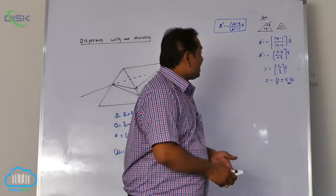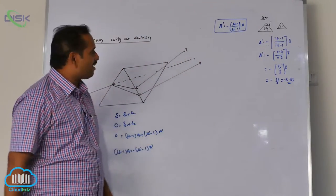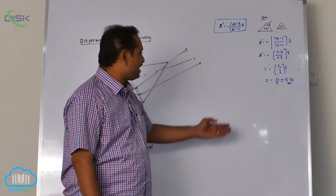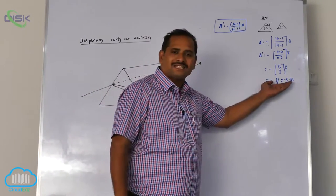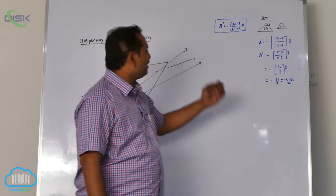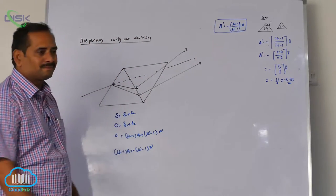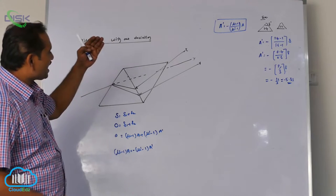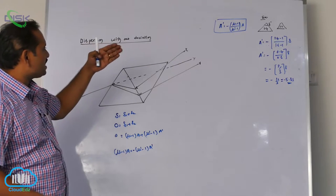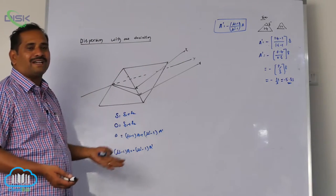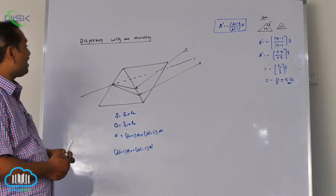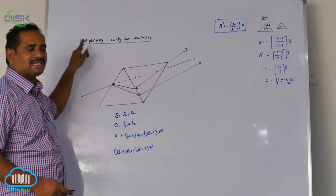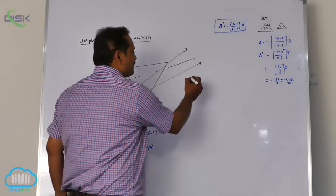To check whether the answer is correct: the angle of the prism should be less than 10 degrees, and 5.33 is less than 10, so the approach is correct. Sometimes in problems they also ask for the total dispersion angle instead of just finding A dash.